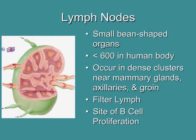Lymph nodes are small bean-shaped organs found throughout the body — we have somewhere around 600 in the human body. They tend to occur in dense clusters near the mammary glands, in the armpits or axilla, in the groin, and underneath the jaw or submandibular area. The function of lymph nodes is to filter the lymph and surveil it for any types of antigens or pathogens. This is a site of B cell proliferation — an area where B cells rapidly divide once exposed to certain types of antigens. Because B cells divide rapidly when they encounter recognized antigens, this causes lymph nodes to swell and become painful. If you go to the doctor complaining of malaise, they may palpate your submandibular lymph nodes — if they are swollen, it can be an indication that an infection is present.